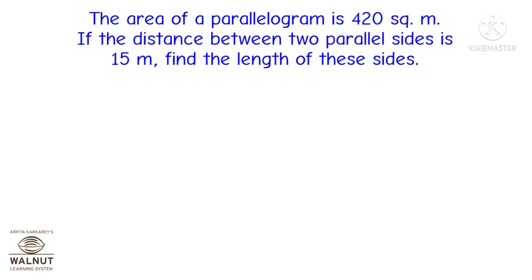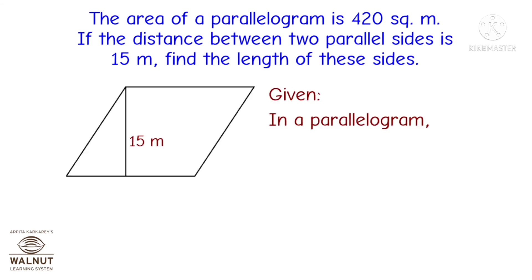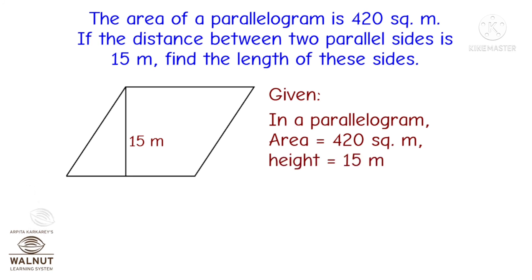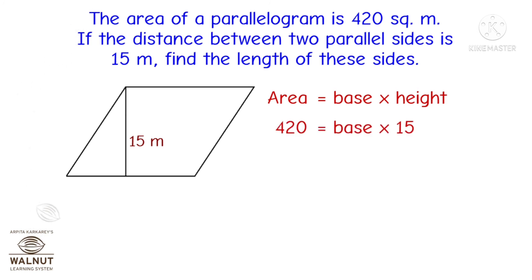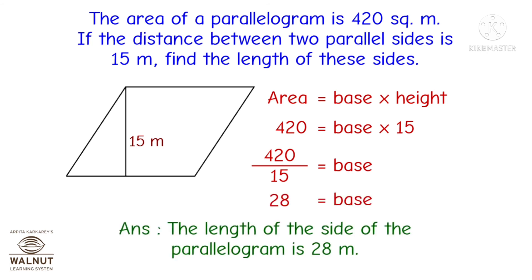We will see one word problem. Area of the parallelogram is 420 square metres. If the distance between two parallel sides is 15 metres, find the length of these sides. The distance between the parallel sides is the height — 15 metres. Area is 420, height is 15, and we have to find the base. Area equals base into height, so 420 equals base into 15. Dividing: base is 420 divided by 15, which gives 28. So, the length of the side of the parallelogram is 28 metres.